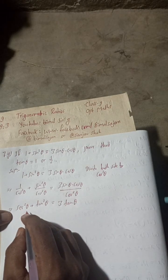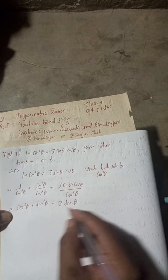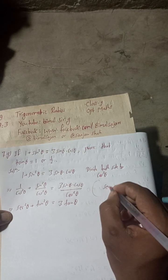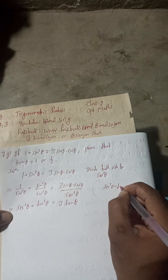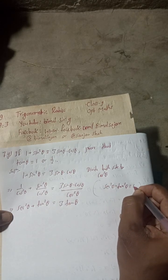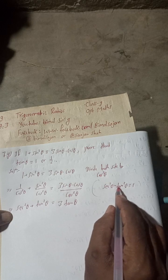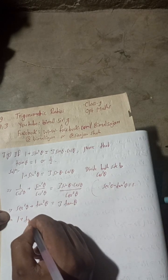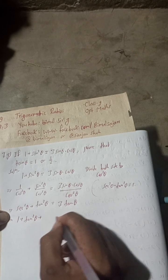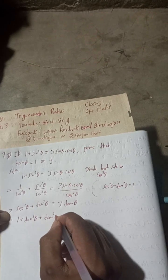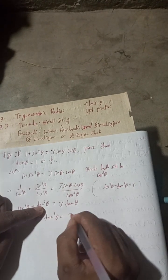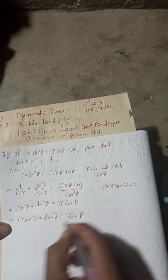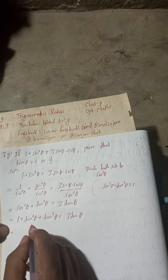Now, using the identity sec²θ minus tan²θ = 1, we know sec²θ = 1 + tan²θ. Substituting: one plus tan²θ plus tan²θ is equal to three tan theta.